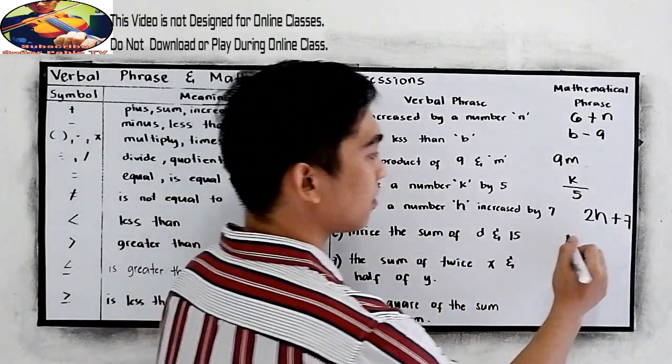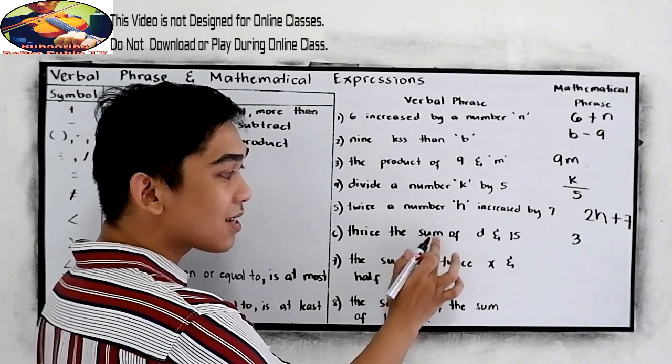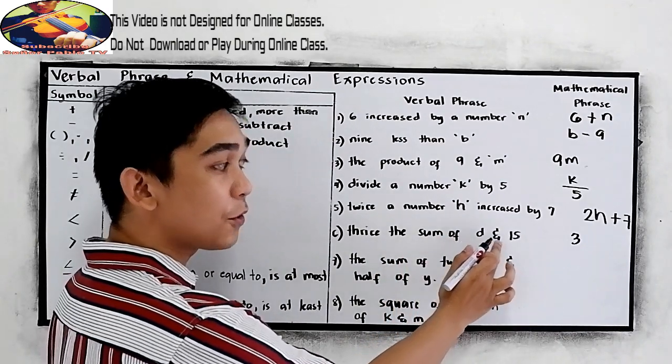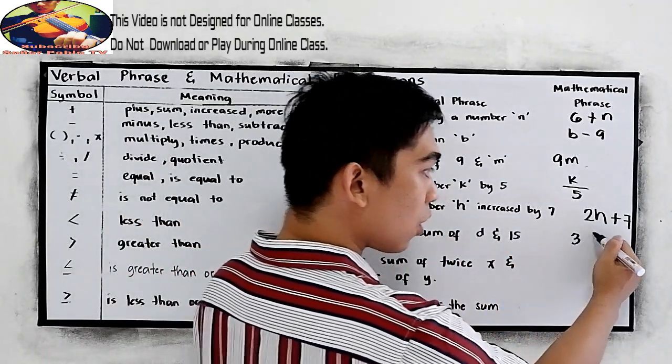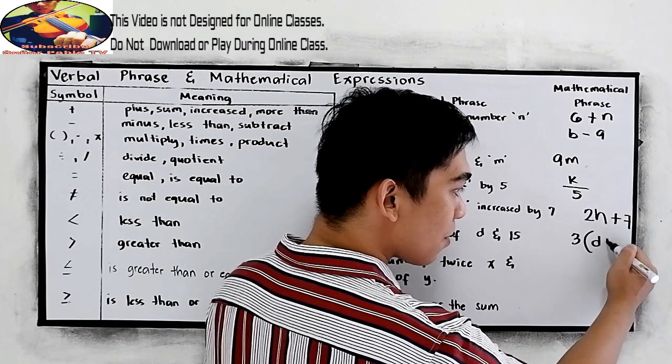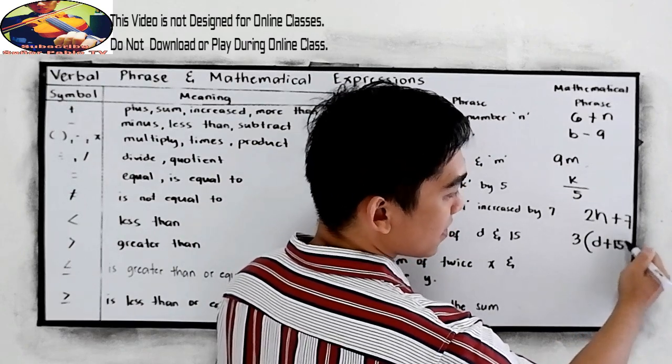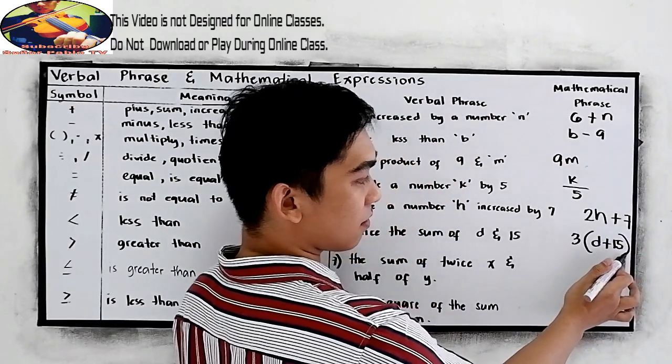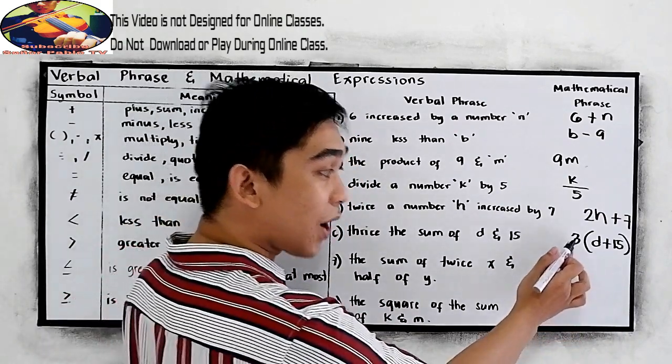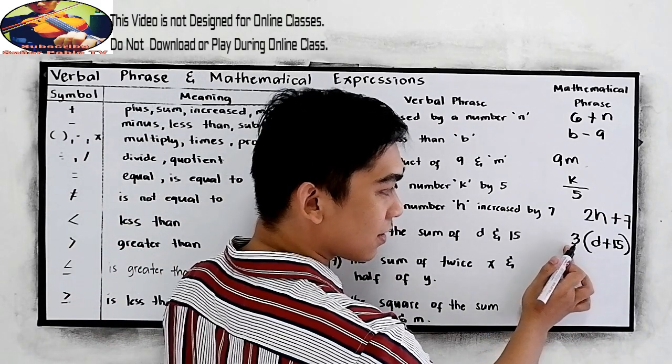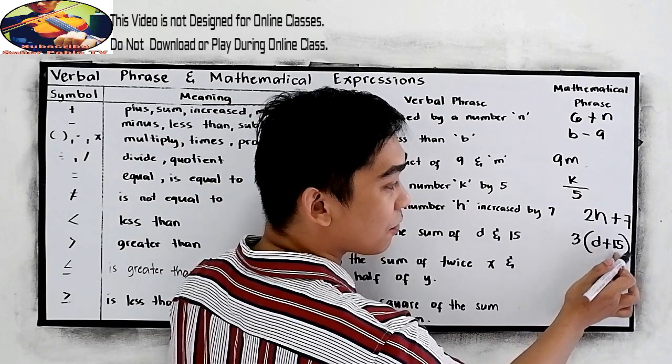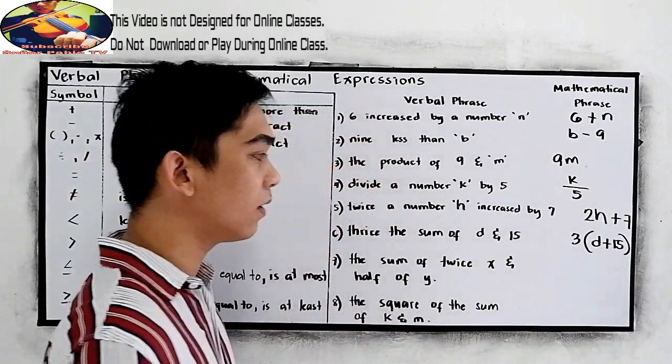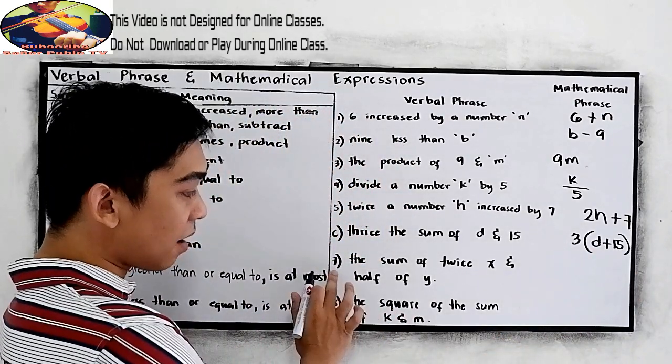And number six. Thrice the sum of d and fifteen. So, we are going to get the sum of d and fifteen. Again, let us repeat. Thrice the sum of d and fifteen.